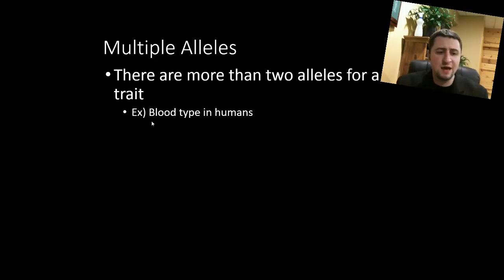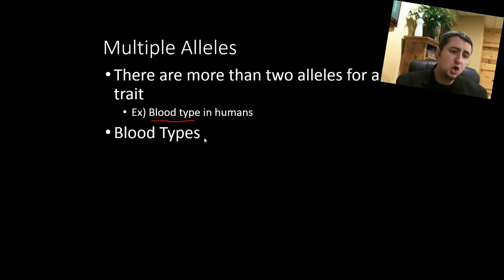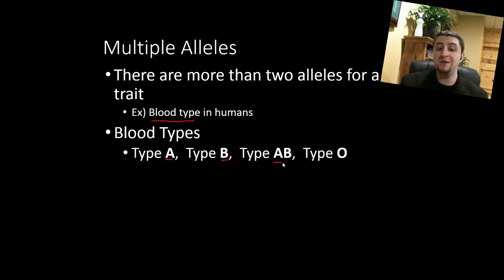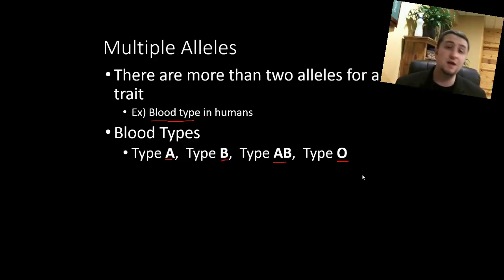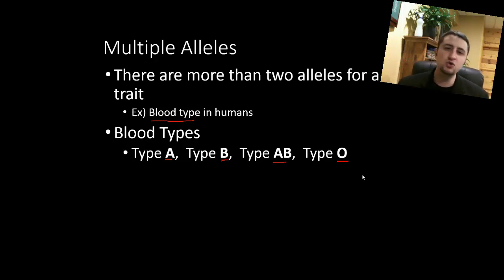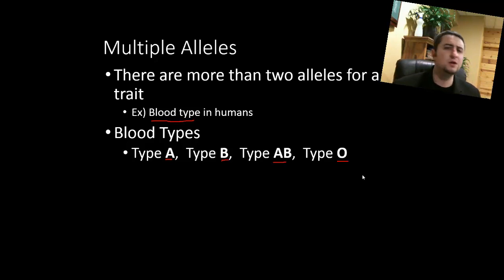One example is blood type in humans. We have many different blood types: type A, type B, type AB, and type O. And also, you can be type A positive, A negative, B positive, B negative, AB positive, AB negative, O positive, or O negative. All those traits are found in the human population, but you don't show all of them at the same time. To find out more about how multiple alleles work, please follow the link here.